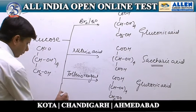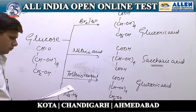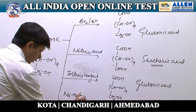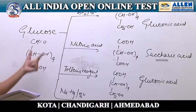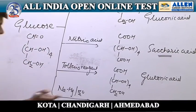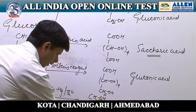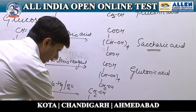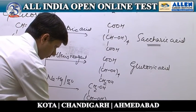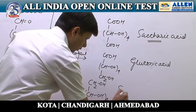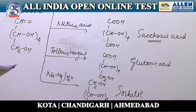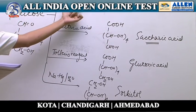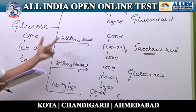Reaction of glucose with sodium amalgam and water causes reduction: the aldehyde group gets reduced into an alcoholic group, forming sorbitol. So glucose with bromine water gives gluconic acid — correct. Glucose with nitric acid gives gluconic acid — that is incorrect, it gives saccharic acid.